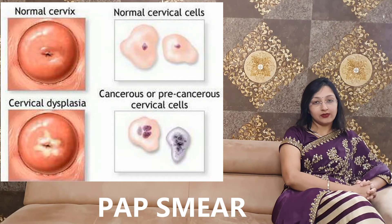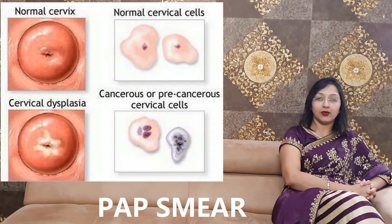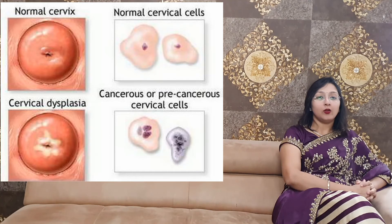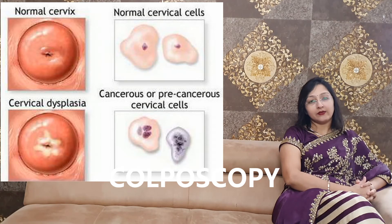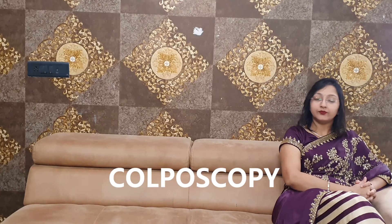Routine yearly pap smear is advisable. Once you get a negative report for three consecutive years, it is advised to get a pap smear done every three years. Colposcopy is also very helpful — it is an OPD procedure which helps in detecting cervical cancer at an early stage. If needed, cervical biopsy can be done. Ultrasound, MRI, and CT scan are other helpful modalities in detecting cervical cancer.